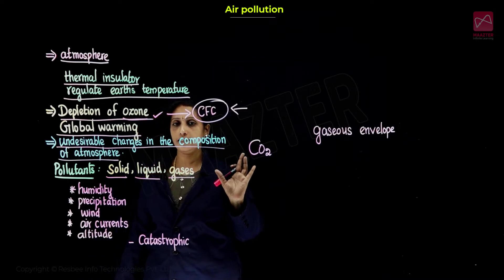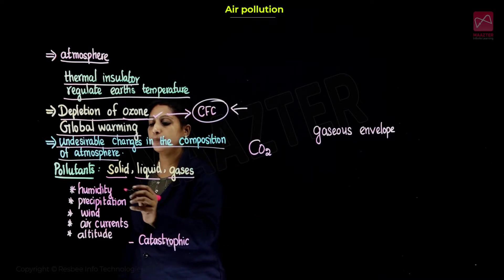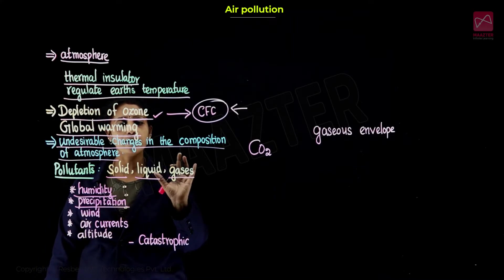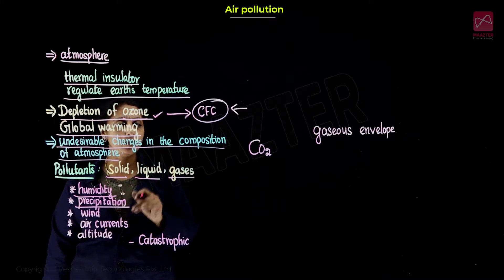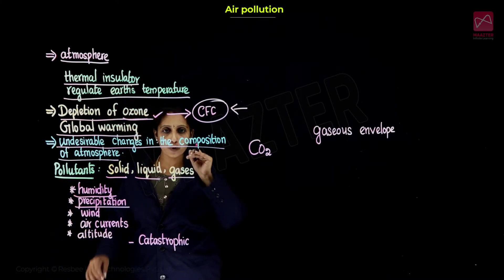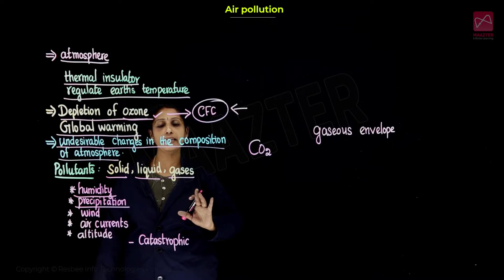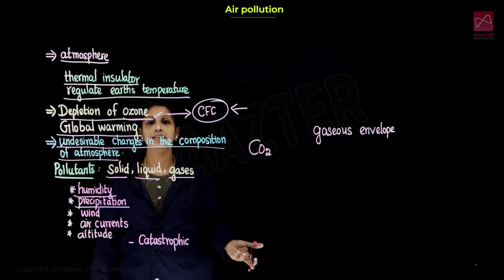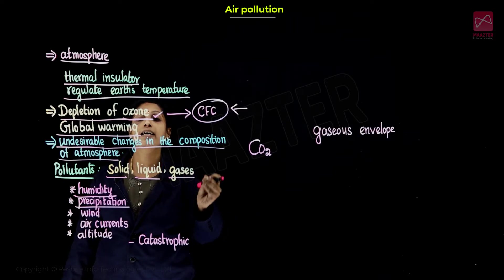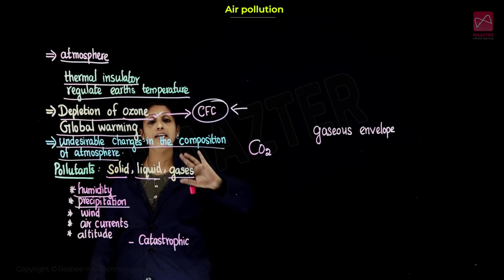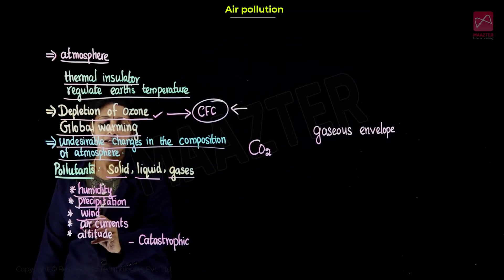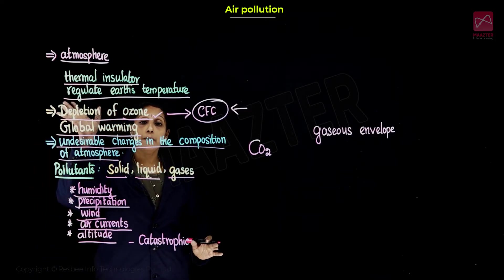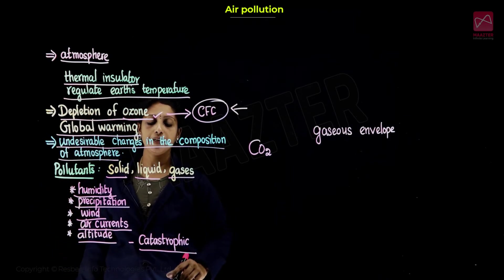Human activities contribute to air pollution. Meteorological factors also play a role — these include air humidity, precipitation, and rain. For example, in Ramadhanthapuram district, you can see the rainfall effects. Other factors include wind, air currents, and altitude, all of which affect how pollution disperses.